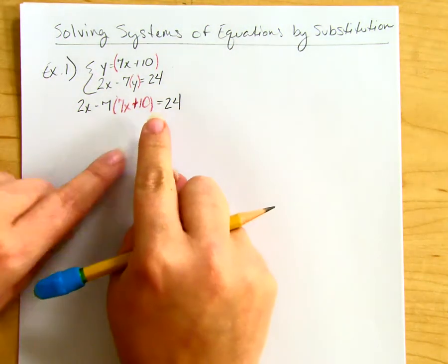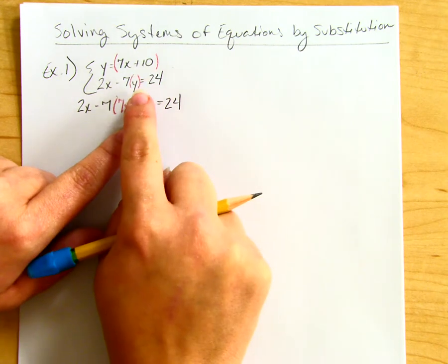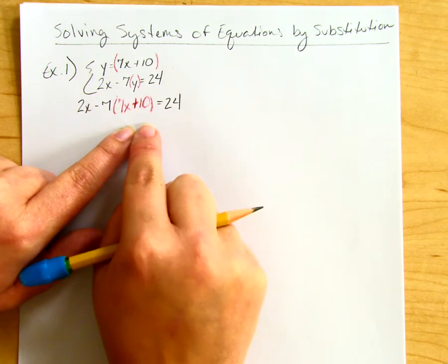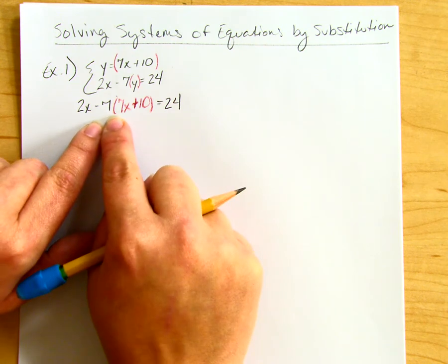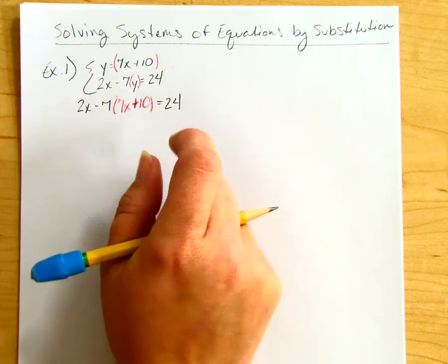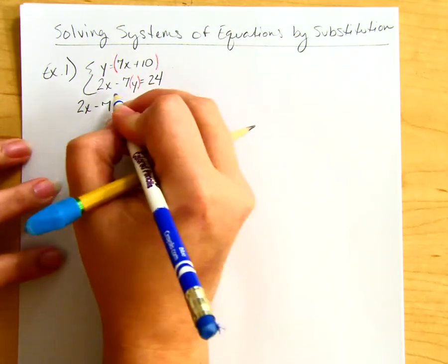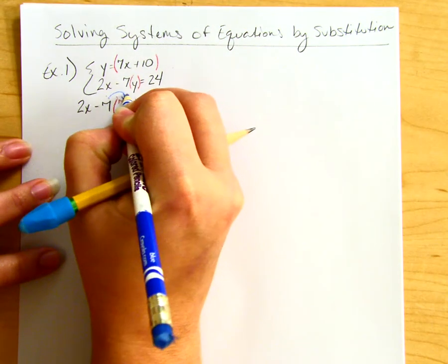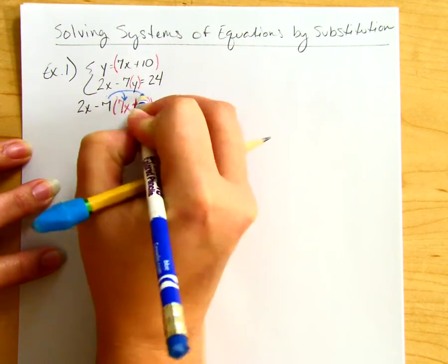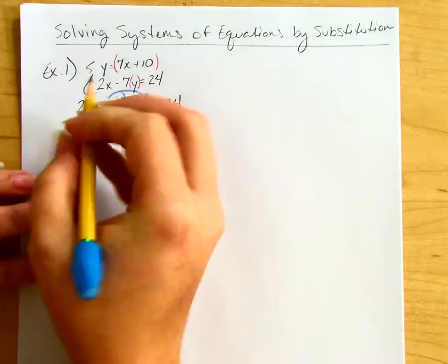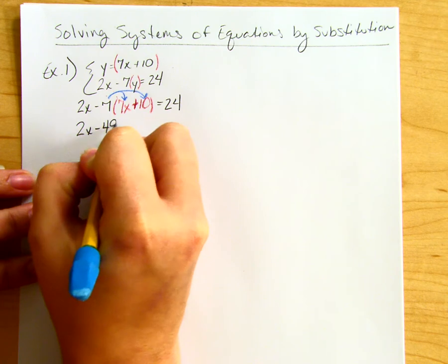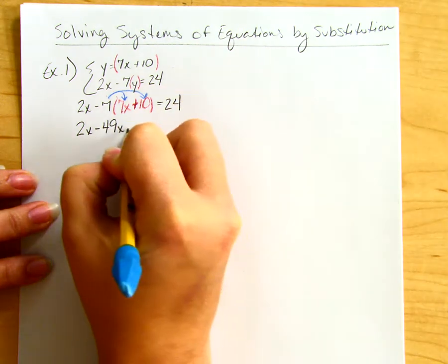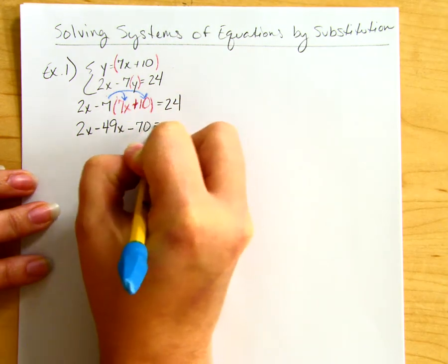I've substituted the value of y from the first equation into the second equation. Now I need to distribute that -7 to both terms inside the parentheses. So -7 times 7x and -7 times 10 gives me 2x - 49x - 70 = 24.